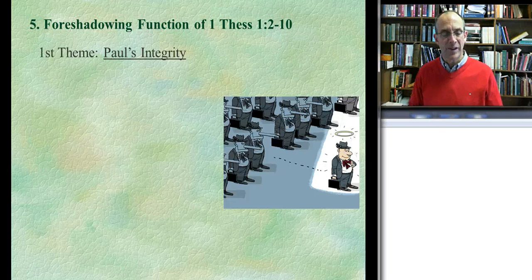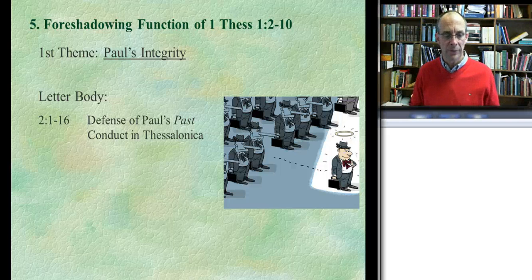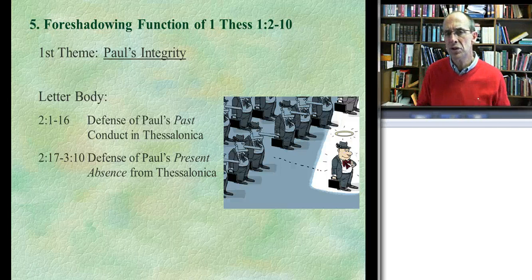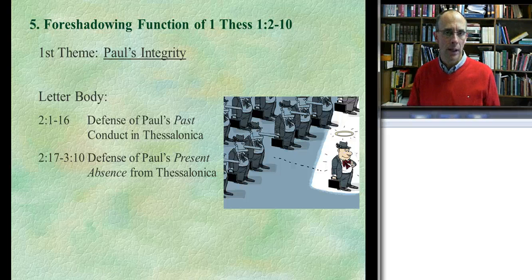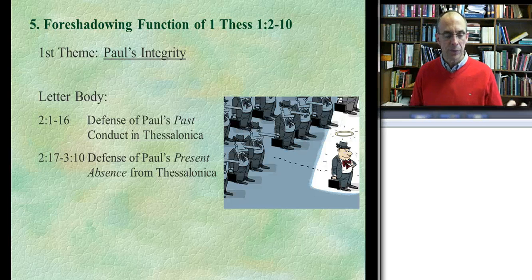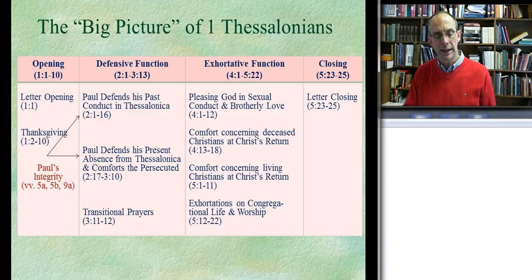If you look at the thanksgiving section, is this theme of Paul's integrity found in the body of the letter? Yes, big time. The body of the letter begins in chapter 2 and Paul has a long section defending how he acted in the past when he was there. Then he has another section defending why he hasn't come back — because his opponents said something like, 'If he really cared about you, how come he hasn't returned? I heard he ran out of town, scared like a dog with his tail between his legs.' In a sense, Paul was run out of town because of those persecuting him and also giving trouble to the Christians left behind in Thessalonica. So this theme is foreshadowed in the thanksgiving and found in the body of the letter, and you can see that in the diagram where the red letters show the verses in the thanksgiving section that foreshadow the theme of Paul's integrity, with arrows showing where he develops it at greater length.